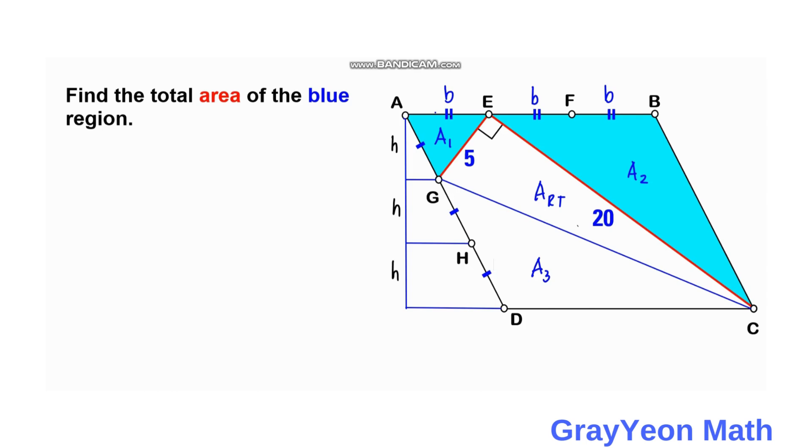So from this we can actually represent the area of the three areas, area 1, 2, and 3. And we can calculate easily for the area of the right triangle.